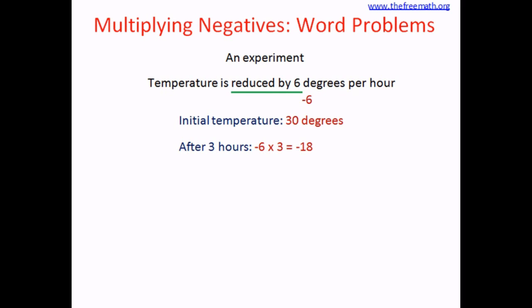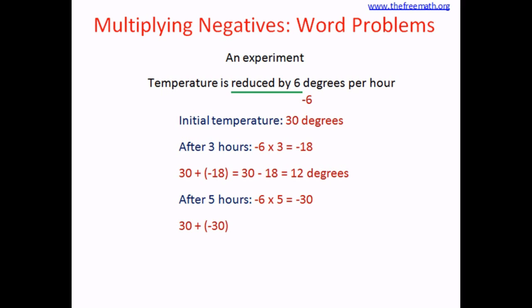The initial temperature is 30, so 30 plus negative 18 equals 30 minus 18, which is 12 degrees. After 5 hours, the change is negative 6 multiplied by 5. 6 fives are 30, so the product is negative 30. The initial temperature was 30, so 30 plus negative 30 equals 30 minus 30, which is 0 degrees. After 5 hours the temperature is 0 degrees.